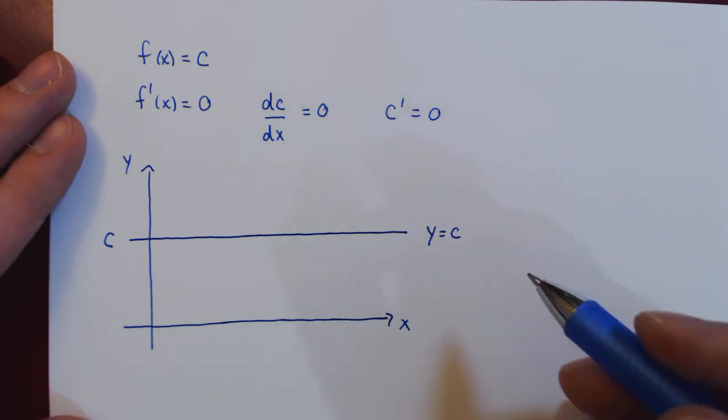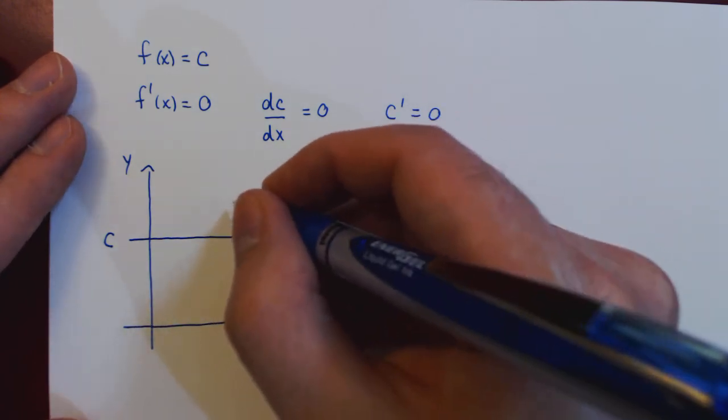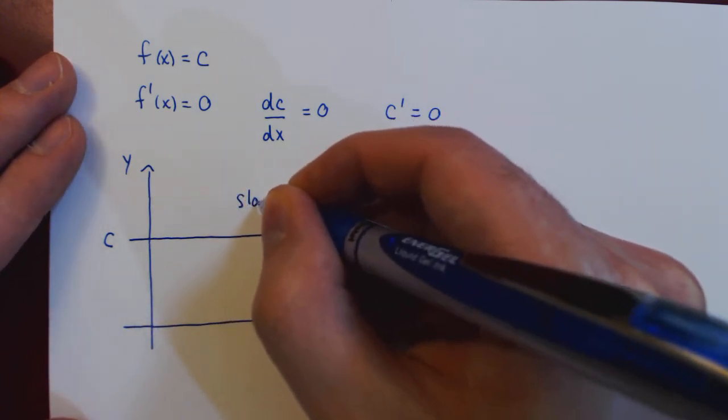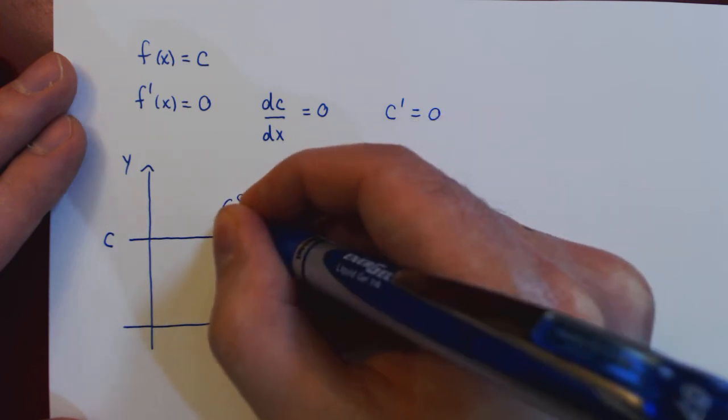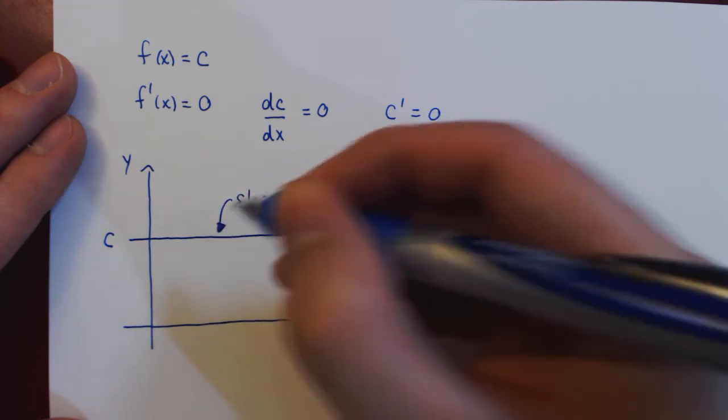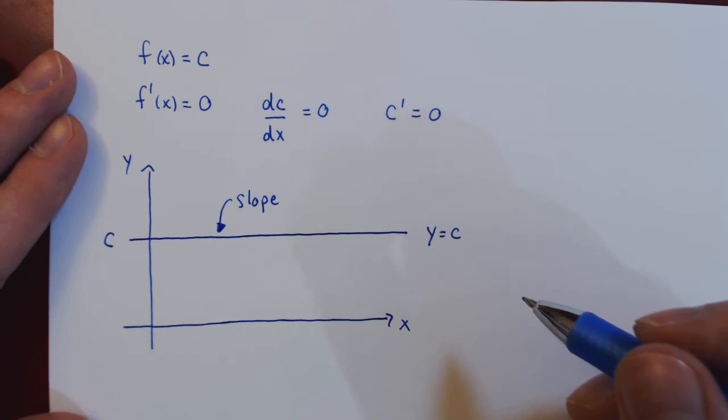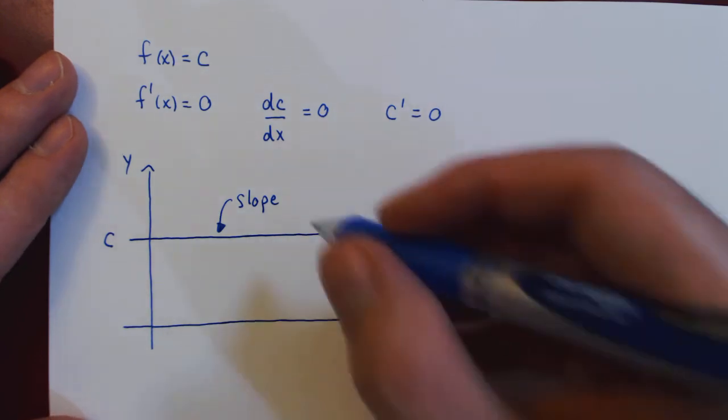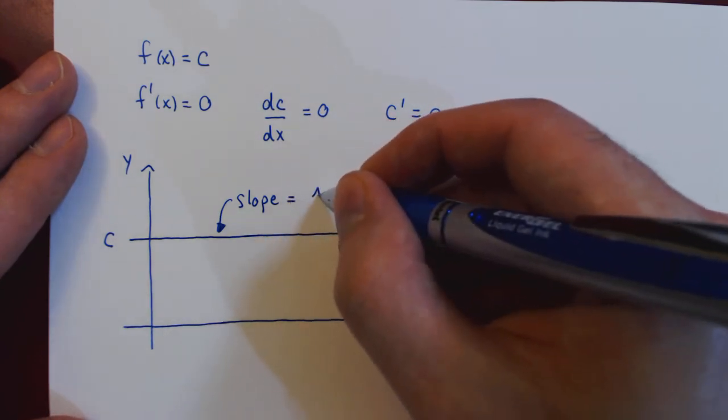And if you ask, what is the slope of this line? Well, the slope of a line is the change in y versus the change in x.